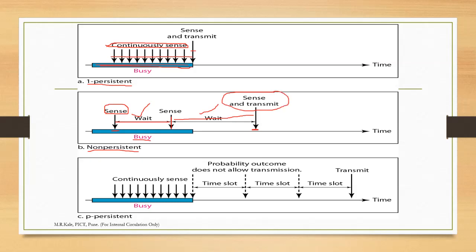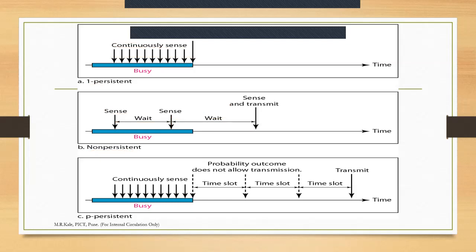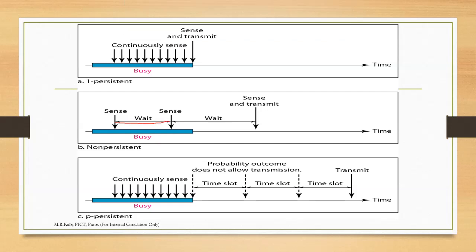What are the disadvantages of these methods? In one-persistent, we need to continuously sense the channel — continuously check whether it is busy or idle. In non-persistent, after waiting a random time, the channel may have become idle at an earlier time instance. The station could have sent the data then, but due to the random waiting period, it waits extra time before sending. This is a wastage of resources in non-persistent. There is another method called P-persistent.